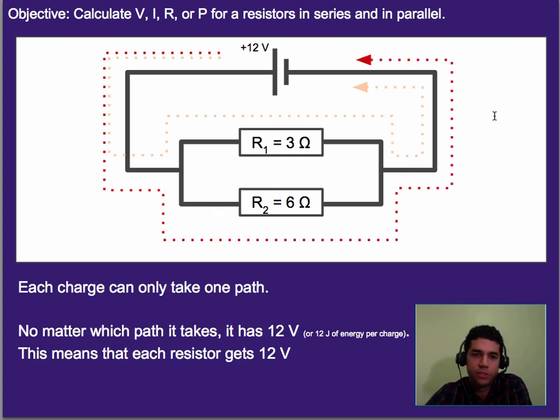Well, based on the rule that we just said before, let's first remember that each charge can only take one path, meaning we've got charge going through, and some of the charge will go through this path, and some of the charge will instead go through and along this red path, where some of it's going to go through the 3 ohm resistor, and some of it's going to go through the 6 ohm resistor.